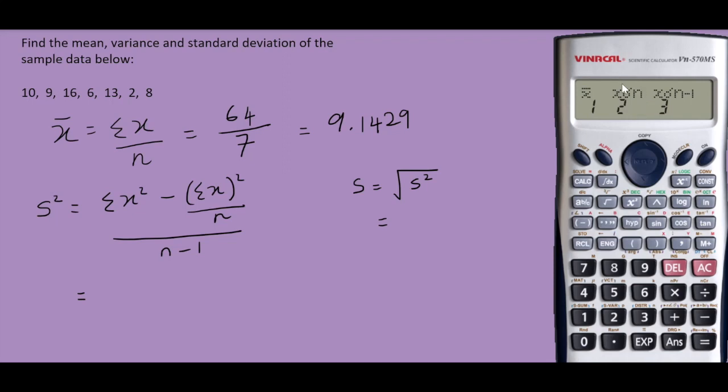As we have discussed before, the formulas are a bit different for the population and sample. So I'm selecting 3 for the sample standard deviation, and the final answer is 4.5617.